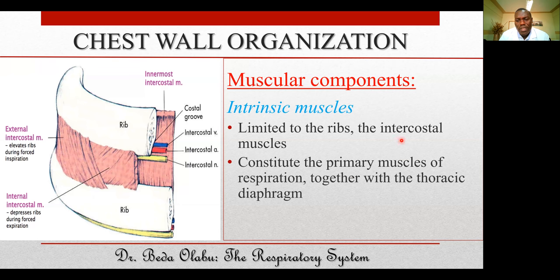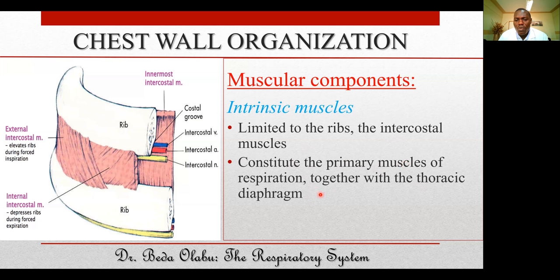The intercostal muscles together with the thoracic diaphragm constitute the primary muscles of respiration. The thoracic diaphragm is not strictly part of the thoracic wall but separates the thoracic cavity from the abdominal cavity. Together, the diaphragm and intercostal muscles are the primary muscles of respiration.